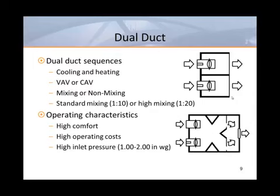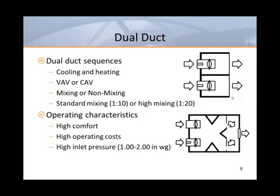Dual duct boxes without mixing chambers should only be used in non-mixing applications — these units provide cooling or heating, but not at the same time. A mixing chamber is absolutely necessary for blending hot and cold air streams together. The standard mixing ratio for dual duct boxes is a 1 in 10 ratio, meaning that for every 10 degrees of difference in the hot and cold supply temperatures, there will be no more than one degree of temperature variation at the discharge duct. High mixing boxes provide 1 in 20 mixing. With the high costs of operating dual duct systems, the market is somewhat limited, but there is renewed interest in dual duct boxes for mixing conditioned air with air from dedicated outdoor air systems. An optional water coil at the discharge could be used for heating without the need to actually reheat.